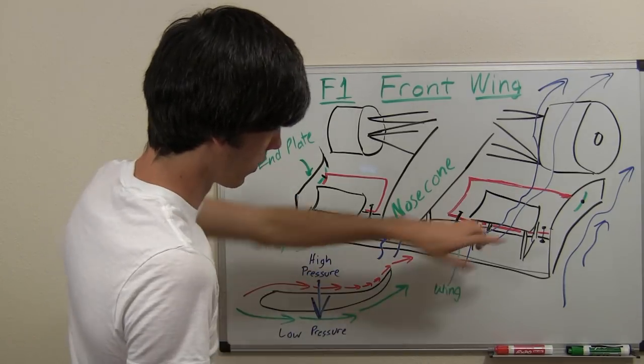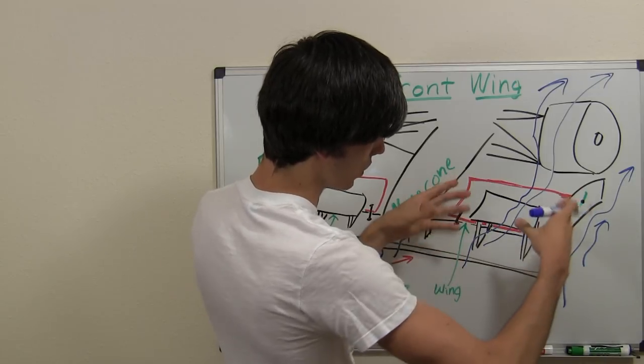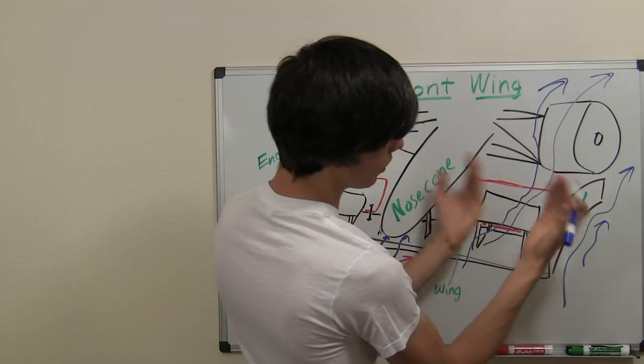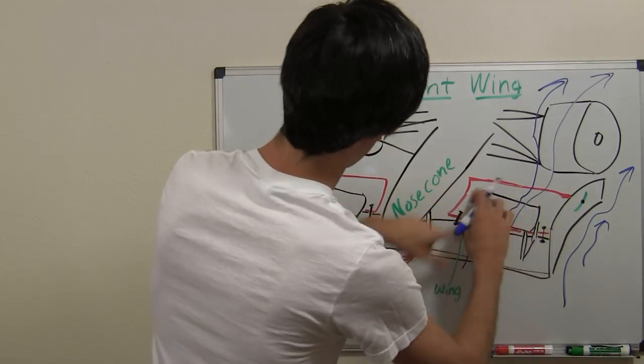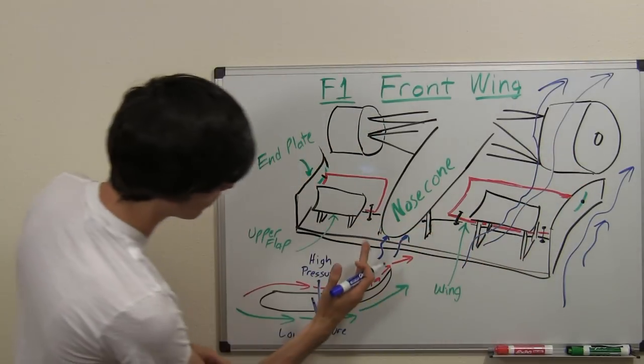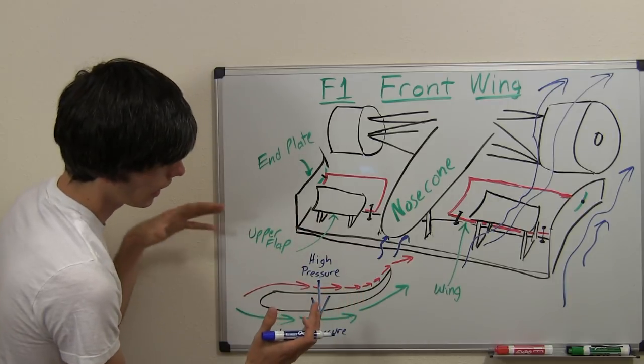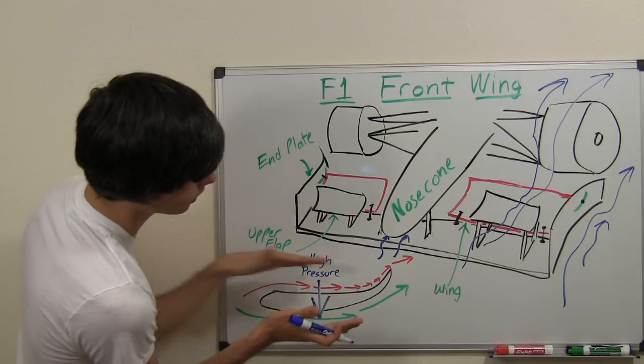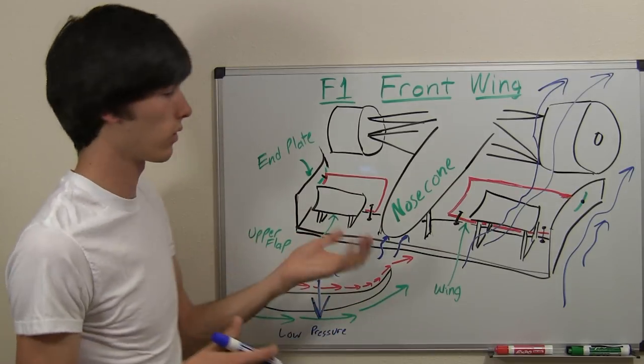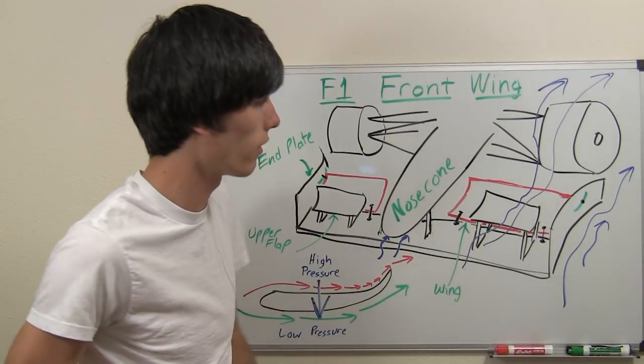These adjustable wings have little pins here that they hook up to so you can angle that. You can adjust that and turn the angle of that wing up or down. If you increase the angle, move it up, then that air is going to have more resistance, pack up more, and create a higher pressure. If you decrease it, it's going to be able to move along more easily, so you're going to have a lower pressure. If you have that higher pressure, you'll have more downforce. If you get a lower pressure, you'll have less downforce.